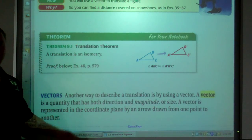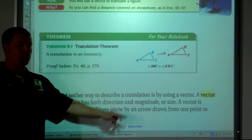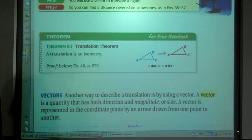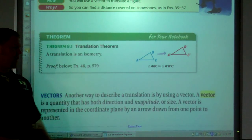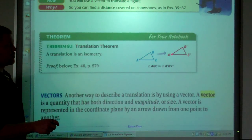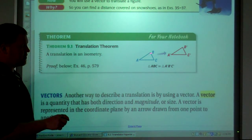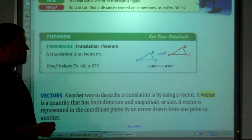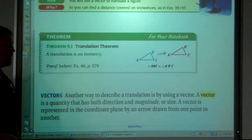Another way to describe a translation is by using a vector. A vector is a quantity that has both direction and magnitude. Magnitude means size. A vector is represented in the coordinate plane by an arrow drawn from one point to another. So going from point B to point B prime, there would be a line with a direction and arrow going from B to B prime, same from C to C prime and A to A prime.